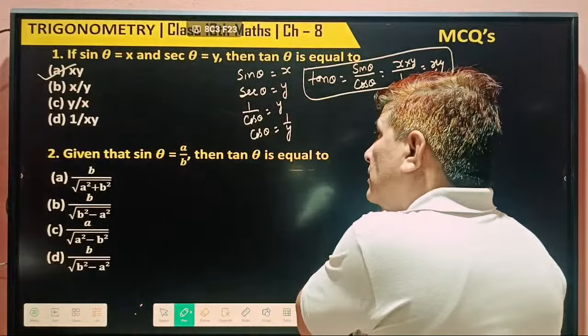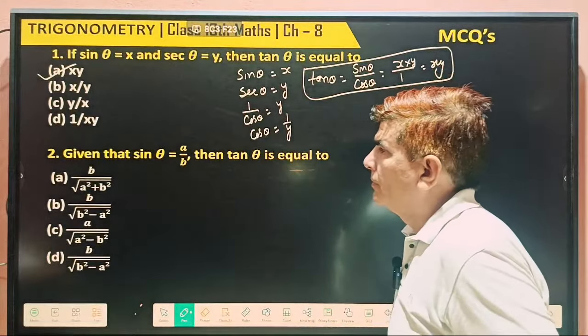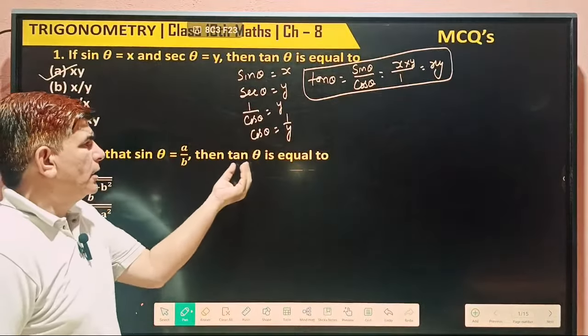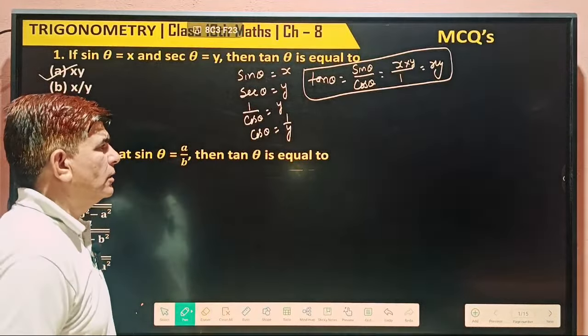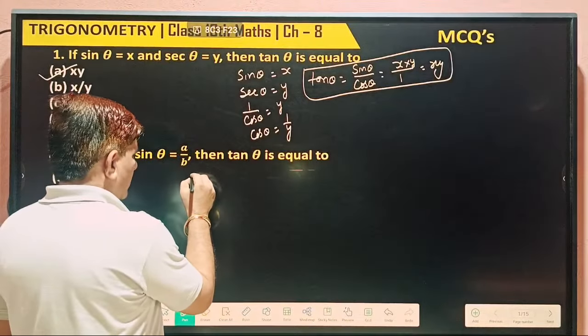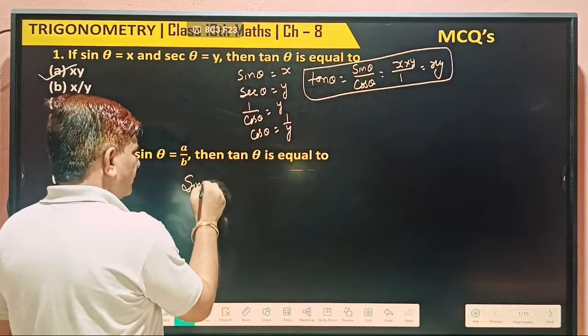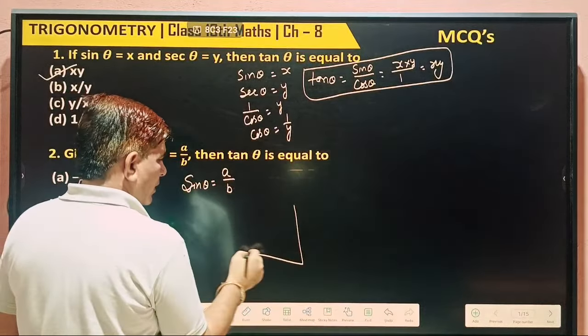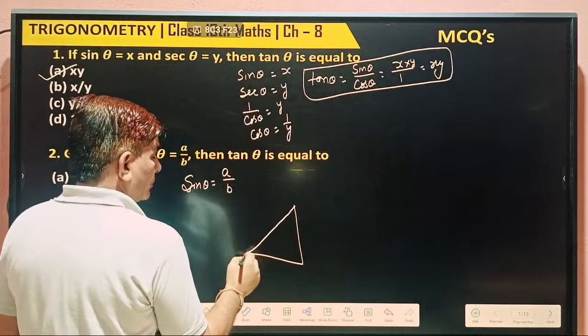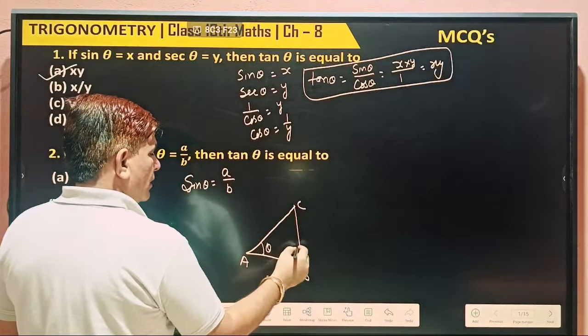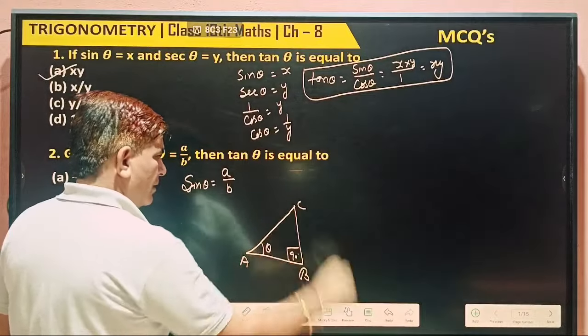Second question: Given that sin θ equals a by b, then θ is equal to what? So what's given? Sin θ is equal to a by b. So we are having a triangle whose vertices are A, B, C. This angle is θ and this angle is 90 degrees. Understood?